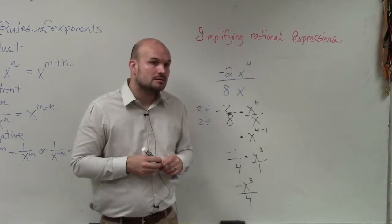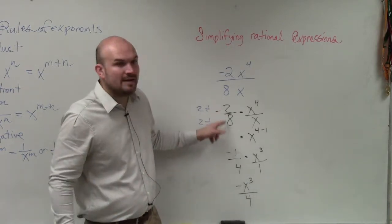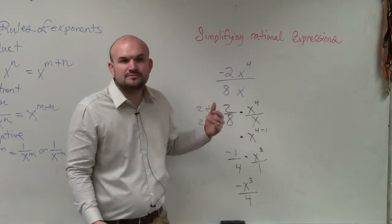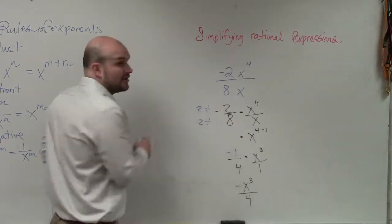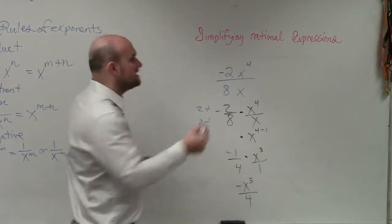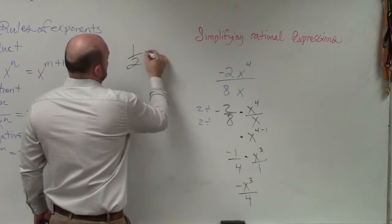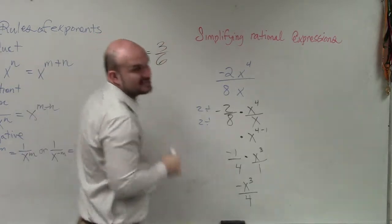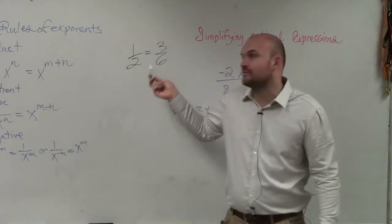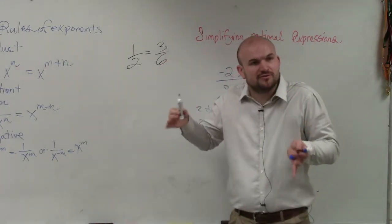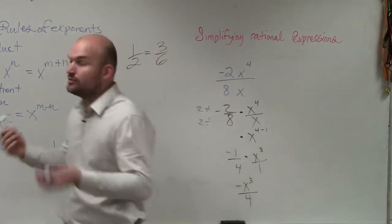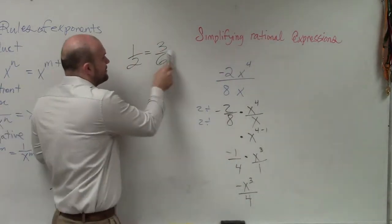Student: I don't understand why you divide by 2. Teacher: Do you understand that 2 is common between 2 and 8? So it's basically just dividing it out. If it wasn't common, you wouldn't be able to simplify it. It's kind of like saying 1 half is the same thing as 3 sixths — but we want to write the simplest form, which would be 1 half. What I did was divide the top and bottom by 3 to give me 1 half.